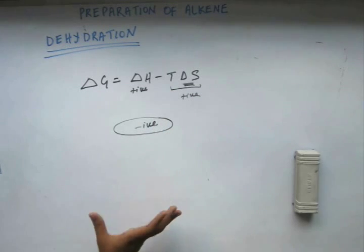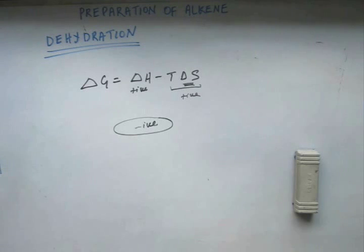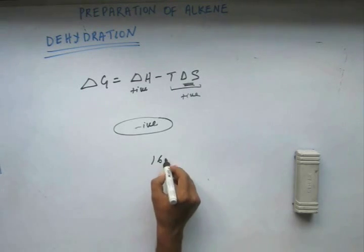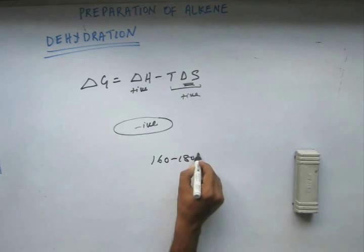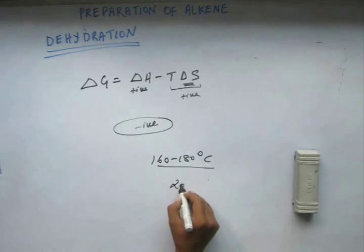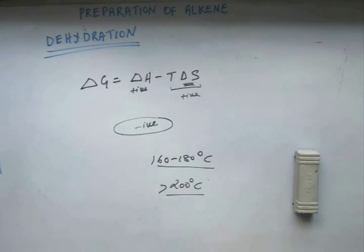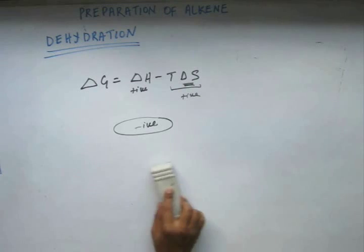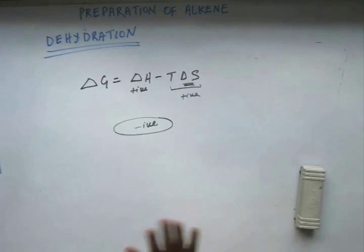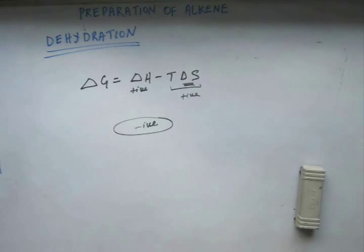For dehydration, temperature has to be high — this is the crux of the discussion. If you don't give high temperature, alkene will not be formed. A high temperature is around 160 to 180 degrees Celsius. For unstable alkenes, you have to keep it greater than 200 degrees Celsius, depending upon the kind of alkene you are getting. So generally 160 to 180 degrees Celsius will be the temperature for dehydration reaction. This is the thermodynamic aspect of dehydration reaction, and we know the mechanism as well.